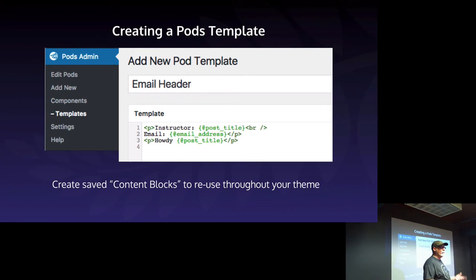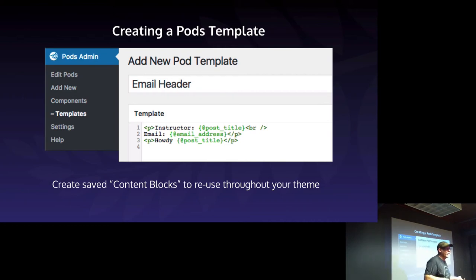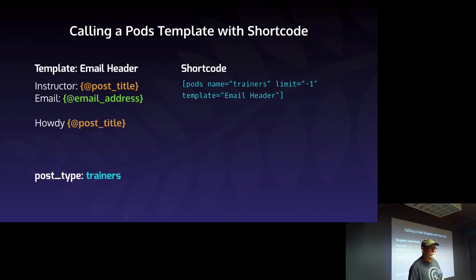This is to make that custom content show — remember when we did the view staff and all it showed was her title? It didn't show the phone number or services or anything like that. Pods templates make that show. You can also call a pods template with a shortcode — that thing we just saved was the 'email header', and instead of doing a custom template inline, you just add 'template equals email-header' to the shortcode tag.